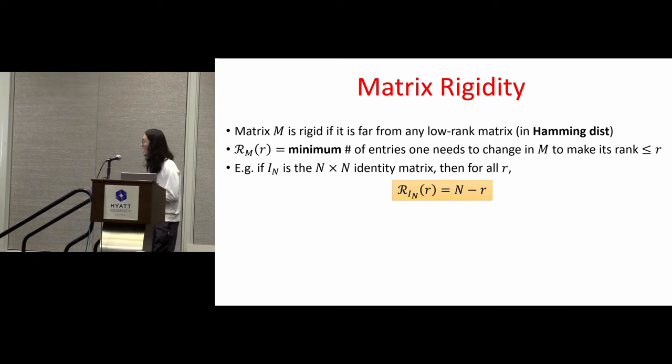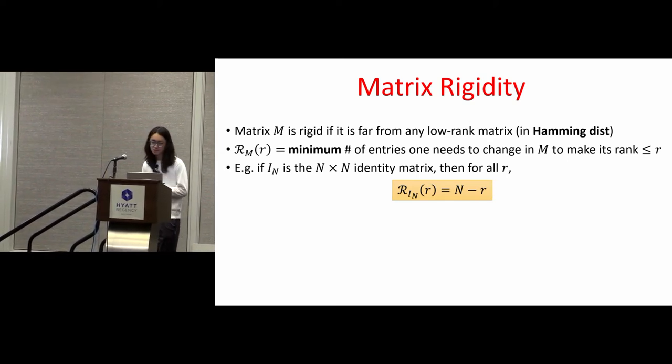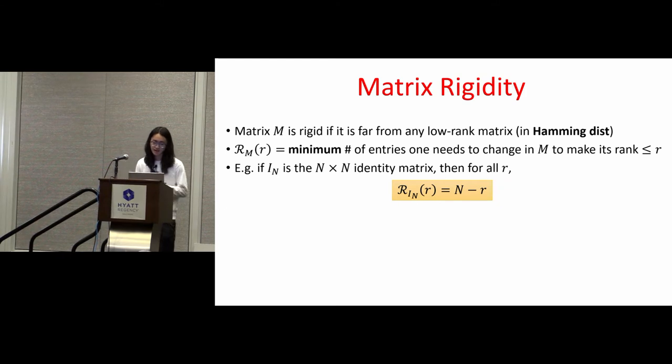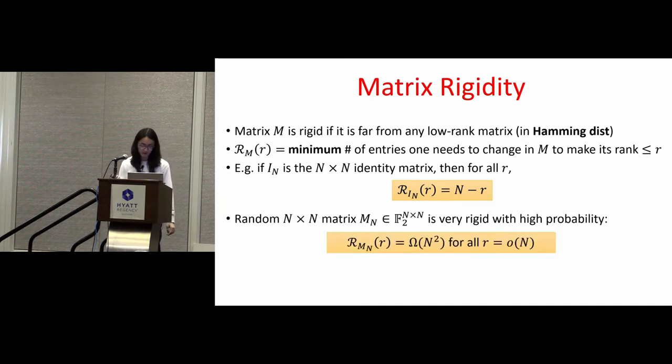For example, if I is the identity matrix, then for R we can change the n minus R entries on a diagonal from 1 to 0 to make the rank drop to R. This matrix is not rigid. On the other hand, a random n by n matrix is very rigid with high probability, and this can be proved by a simple counting argument.